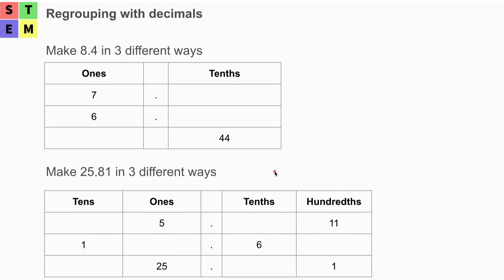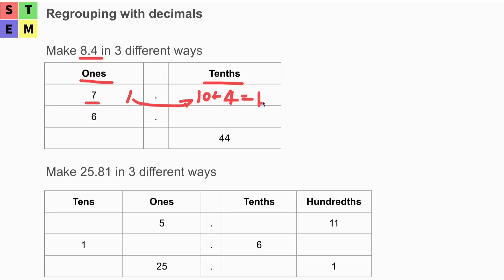Let's look at another example. We will make 8.4 in three different ways. We have ones and tenths. In the first row, we have seven at the ones place — so one is missing, meaning we put that one into the tenths place. At the tenths place we already have four, and we add 10, giving us 14 at the tenths place.